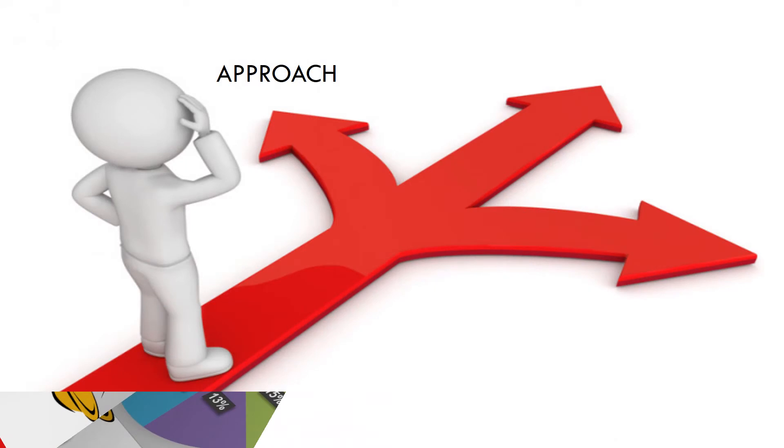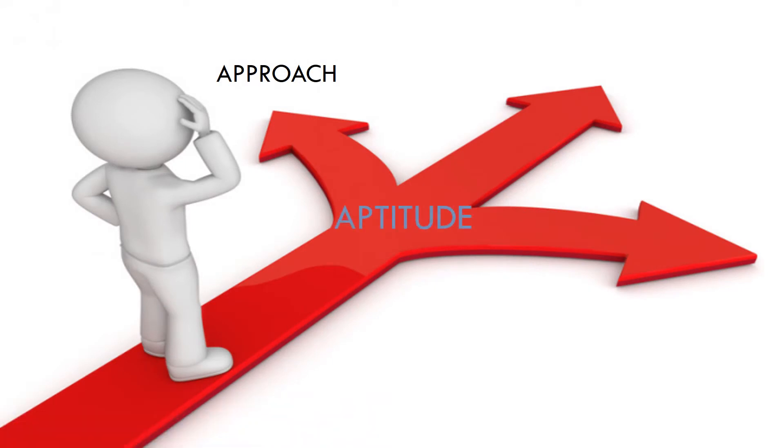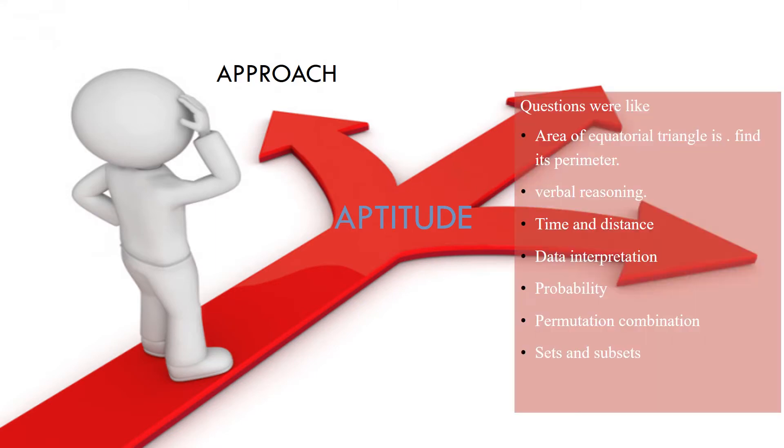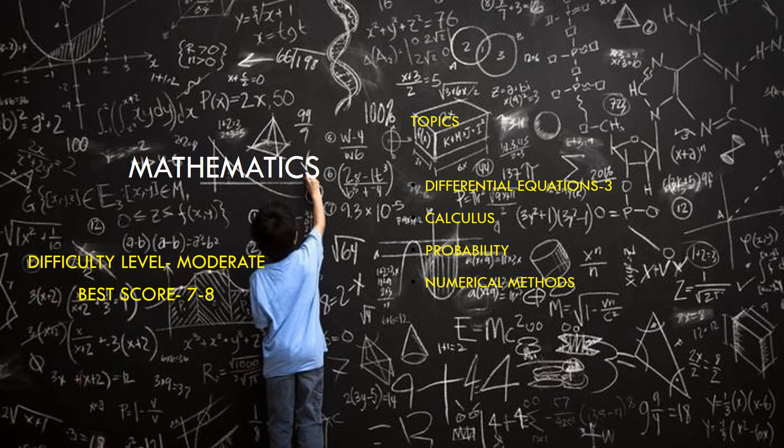What could have been the right approach to tackle this paper? Well, this time in GATE, the aptitude part was maintained at a moderate level with the inclusion of permutation and combination, with the expected base score of 12. Whereas in mathematics, the topics covered—differential equations, calculus, probability, and numerical methods—maintained the difficulty level at moderate, with the expected base score of 7 to 8.